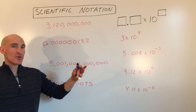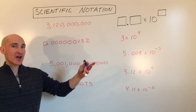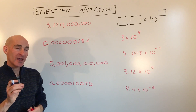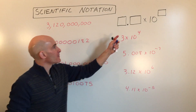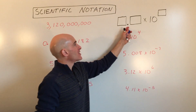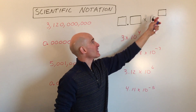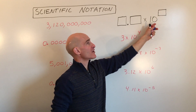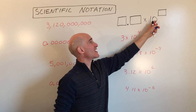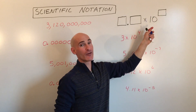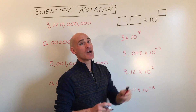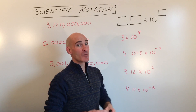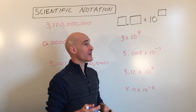Scientific notation is a way of representing really large numbers and really small numbers in a compact way. What we do is write the number as a power of 10, and this is considered an order of magnitude. So if you're comparing scientific numbers and one is 10 to the second power versus 10 to the third power, you know the one that's 10 to the third power is going to be larger by an order of magnitude of 1.